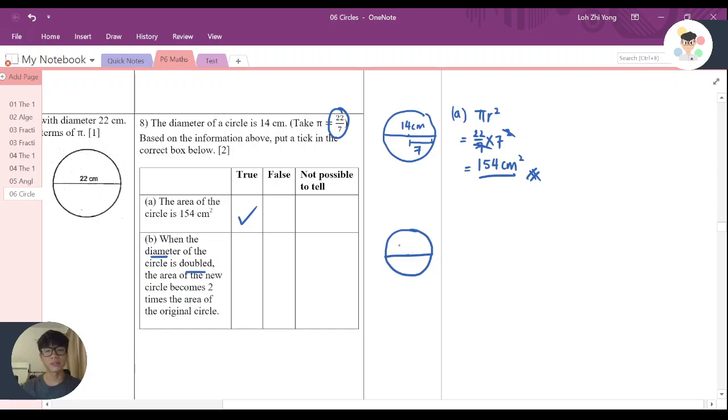It means that the diameter now is basically 28 cm, doubled up, right? So let's check out what is the area now. πr² is 22 over 7 times—now what's the radius? Half of it, the radius is 14. So it's 14 squared.